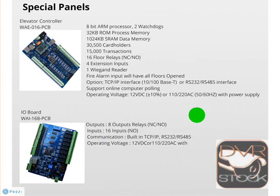We can also see special panels like the IO board and the elevator controller. The elevator controller also has RS-485 or TCP/IP built-in. It can handle up to 30,500 cards and 15,000 transactions. Every module can handle up to 16 floors, and using the PEGI module you can go all the way up to 128 floors.